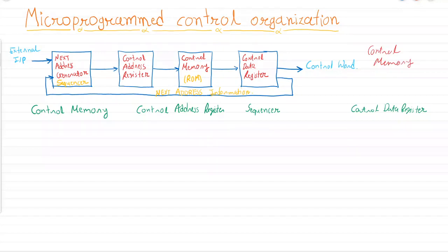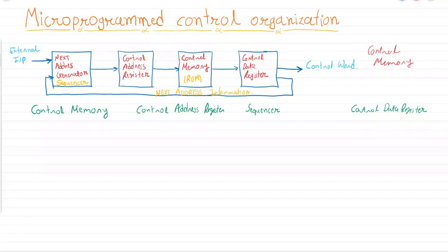A common principle applicable to every type of memory is that without an address there is no meaning to memory. Whenever we want to read any content from memory we have to specify the address. The same thing applies here — in the micro program control unit there is a control memory, and this control memory is accessed using the control address register.